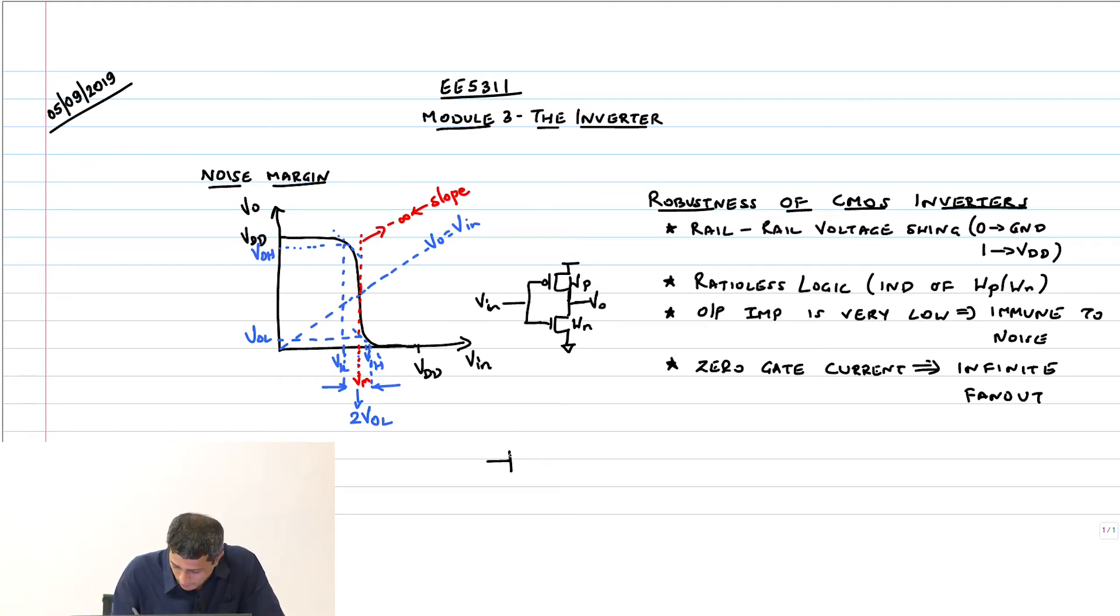What does this mean? If I have an inverter like this, fan out is basically how many other gates it can drive, what load it can drive. I am going to drive 1, 2, 3 gates and so on.